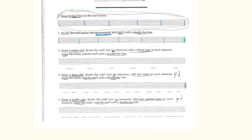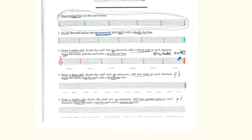The next one gets trickier. You have to draw a treble clef, then divide into six measures, and put the double bar line at the end. Then you put a whole note in each measure — you can place the whole note anywhere on the staff from the bottom line to the top line, any space in between. Then name each note, and they should all be different notes.